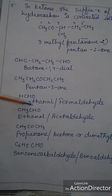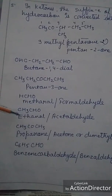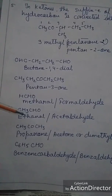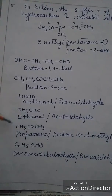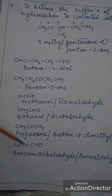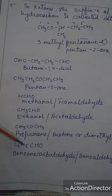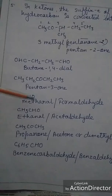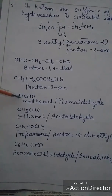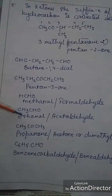Methanal has one carbon. With two carbons it will be ethanal. With three carbons it will be propanal. This is benzaldehyde, which is a common name; otherwise it is benzenecarbaldehyde. Formaldehyde and acetaldehyde are common names for methanal and ethanal respectively, and acetone is the common name for propanone.